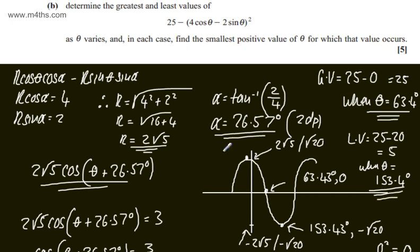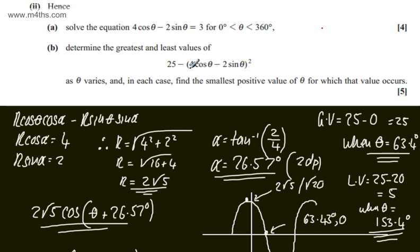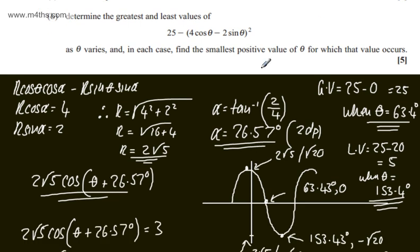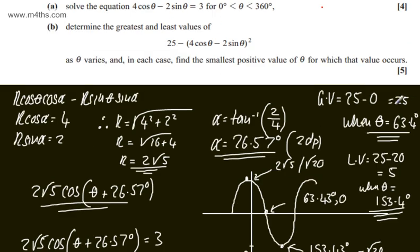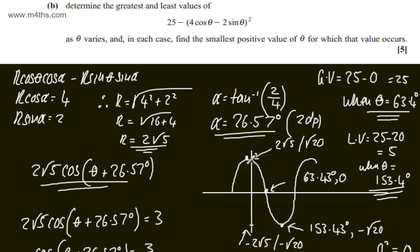There are various approaches here, but remember we're squaring the bracket. If you draw the function squared, it has a maximum of 2root5 and a minimum of 0. Substituting those in gives the greatest value of 25 when θ = 63.4° and the least value of 5 when θ = 153.4°.